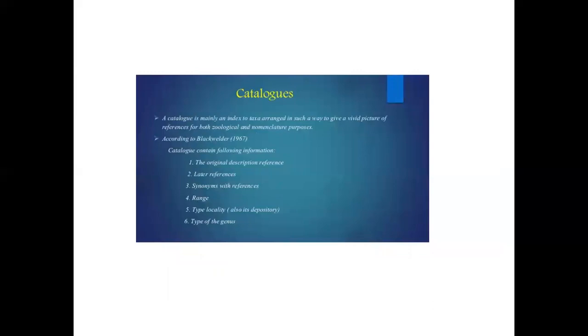Catalogs: A catalog is mainly an index to taxa, arranged in such a way as to give a vivid picture of references for both zoological and botanical nomenclature purposes.